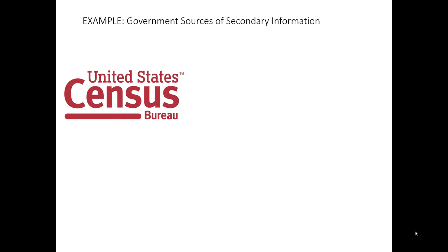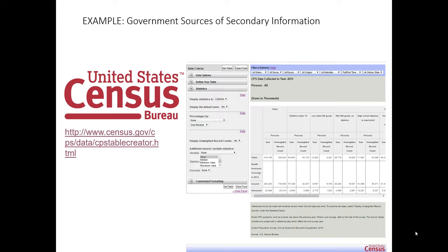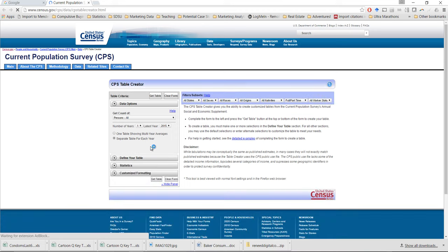Government sources provide enormous amounts of secondary information that's useful to marketers. This can come from local, state, national, and international government sources. The example we're going to use here is perhaps one of the most common sources used by marketing researchers in the United States — secondary information from the United States Census Bureau. If you go to the census.gov website, there are numerous different tools the Census has built out to make it easy to search from their wide variety of available information. In this particular example, I'm using their Current Population Survey table creator tool, the CPS table creator.